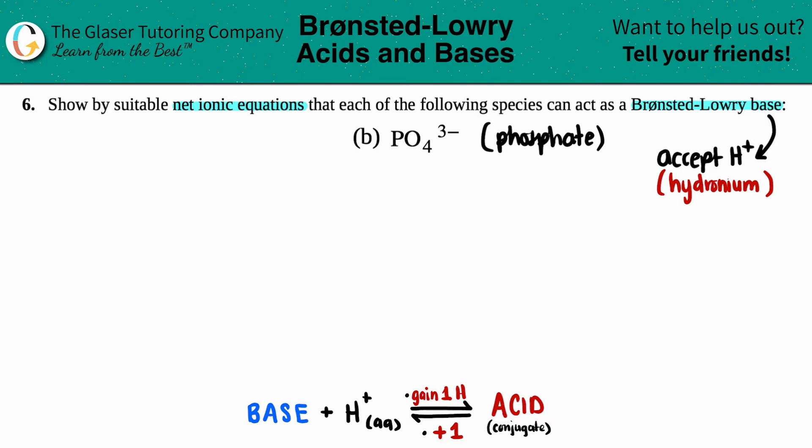In this case, we're working with H⁺ because it's easier. Remember, the base takes the H⁺, and the acid donates it. You get the H⁺ or hydronium ion from acids.